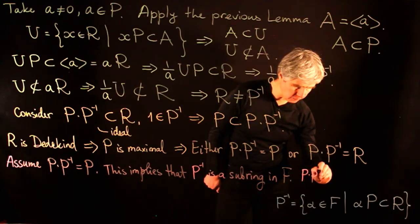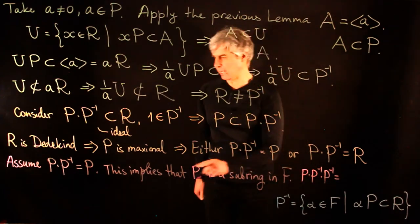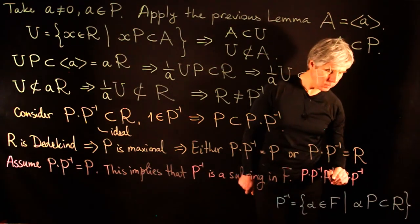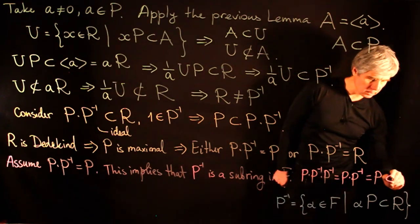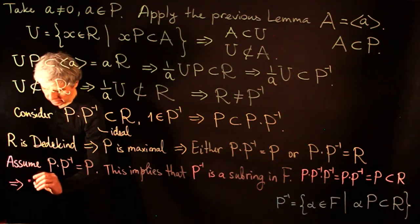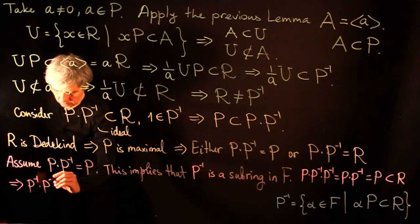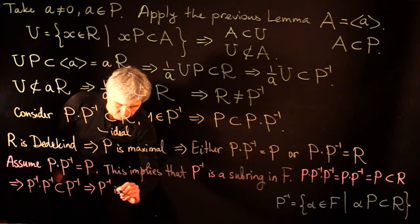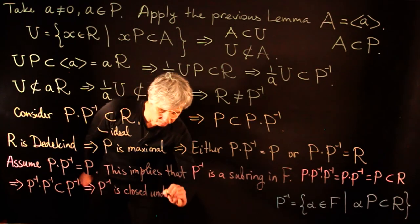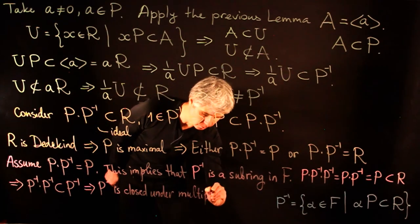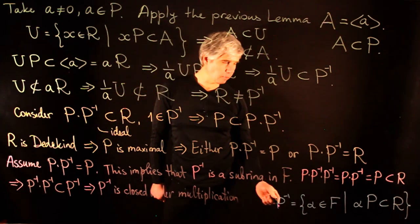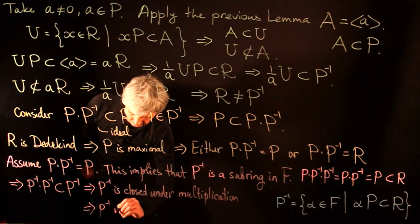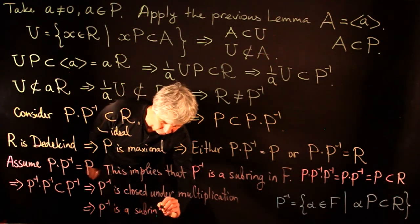This implies P⁻¹·P⁻¹ ⊆ P⁻¹, so P⁻¹ is closed under multiplication. And from its definition it is clear that P⁻¹ is an additive subgroup. So P⁻¹ is indeed a subring in F.